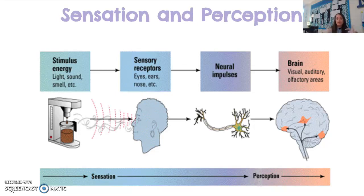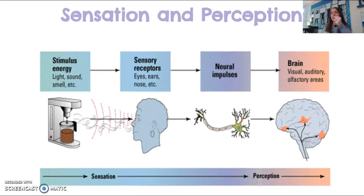When that information gets to the brain, your brain's understanding of what it's receiving is called perception. Perception is the brain interpreting and making sense of all of the information it has gotten from the environment, and that applies to all sensation.